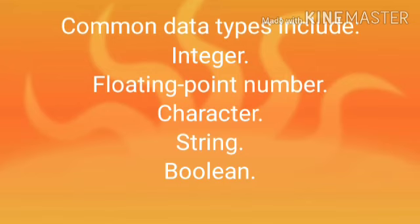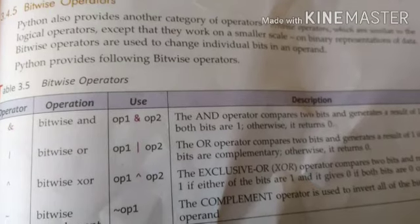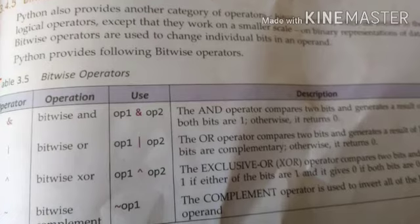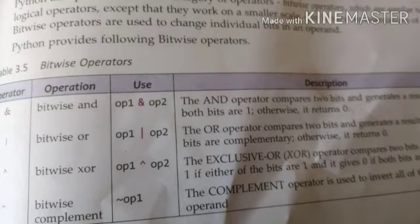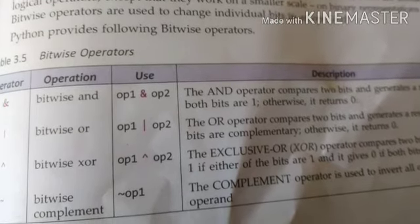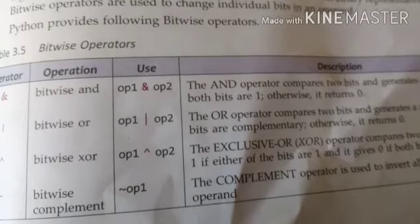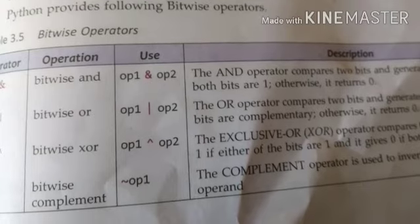Now the next topic is the bitwise operators. These are single AND, single OR, single NOT, and single exponent sign. These operate when we are doing binary operations. Binary operations are used when we are creating values of boolean algebra, which is a topic given at the last of this book, so we will continue it there, but a little bit is given in this chapter so I am explaining it here.